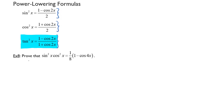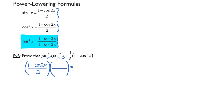Now let's go ahead and prove that sine squared x times cosine squared x equals 1 eighth times 1 minus cosine of 4x. Using the power lowering formulas we just reviewed, we substitute: sine squared x is replaced with 1 minus cosine of 2x over 2, and cosine squared x is replaced with 1 plus cosine 2x over 2. Multiplying these two fractions together, I will have 1 minus cosine squared of 2x all over 4.